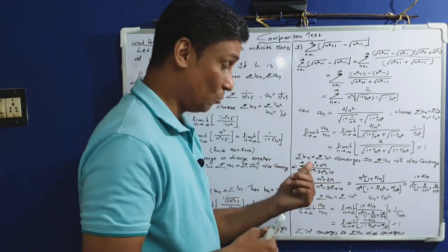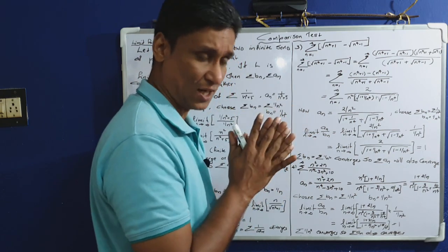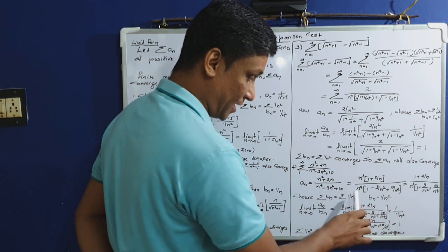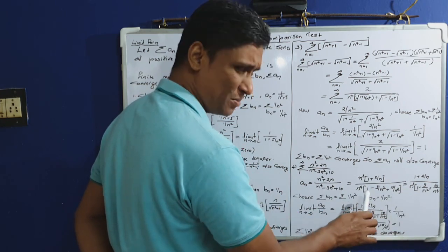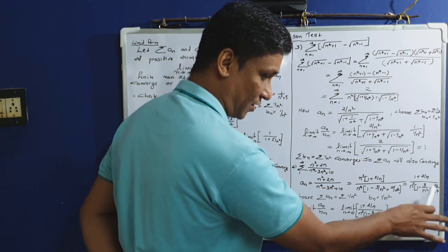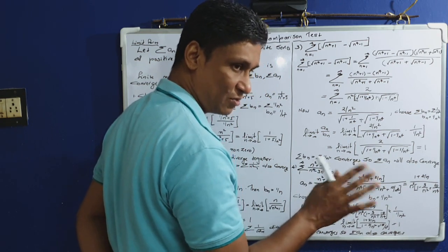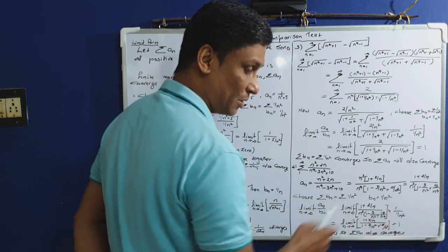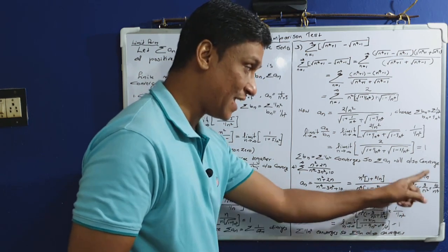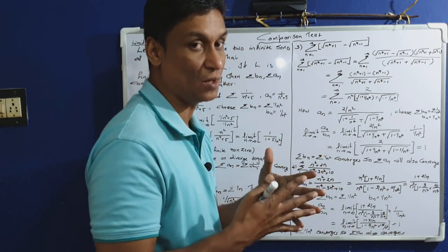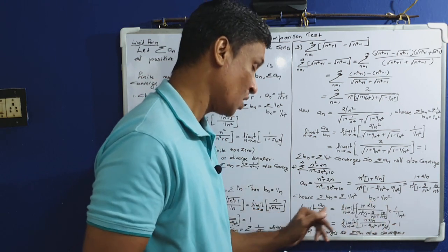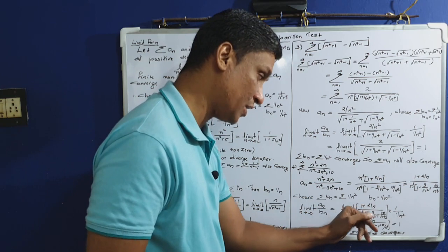Factoring: a_n equals n²(1 + 2/n) divided by n⁴(1 − 3/n² + 10/n⁴), which simplifies to (1/n²) times (1 + 2/n) divided by (1 − 3/n² + 10/n⁴). I am choosing sigma b_n equal to sigma 1/n², so b_n = 1/n². Then limit n tends to infinity of a_n by b_n equals limit n tends to infinity of this quantity times n².